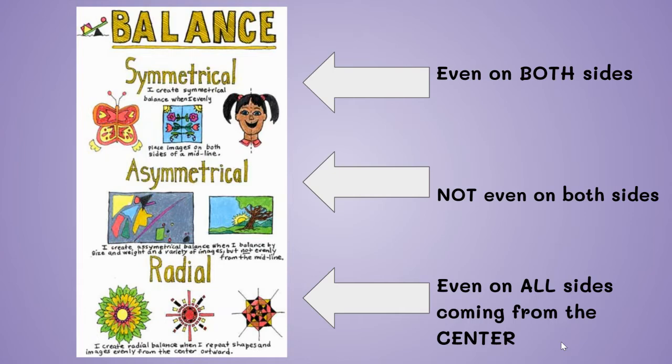And finally there's radial balance, where you repeat shapes and images evenly from the center outward. As you can see, the flower and the other designs, shapes, and images are repeated from the center.